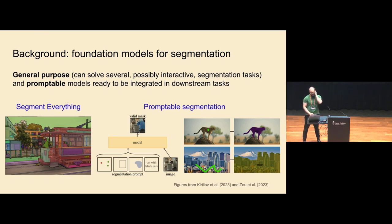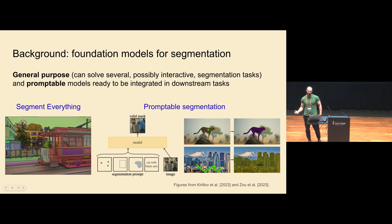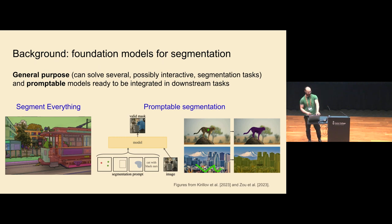These foundation models for segmentation are general purpose in the sense that they can solve several tasks. For example, you have an image and you want to segment everything inside — you want masks for every object. You don't need to assign classes to these objects, just colorful masks where each color is a different object. Then you also have semantic segmentation, which is basically the same but you also assign classes to each mask, like sky, ground, and so on.